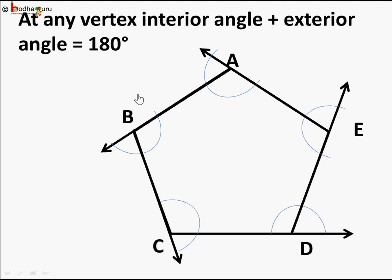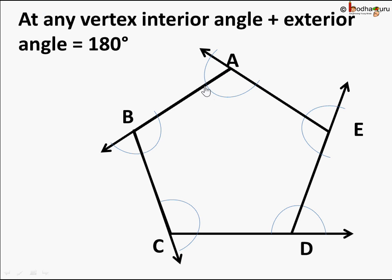Now let's find the value of each exterior angle, but for a regular polygon. A regular polygon has each side of the same length and each interior angle also the same. Observe carefully — here I have drawn the exterior angle and the interior angle. On any vertex, because this is a straight line, the interior angle plus the exterior angle is equal to 180 degrees.